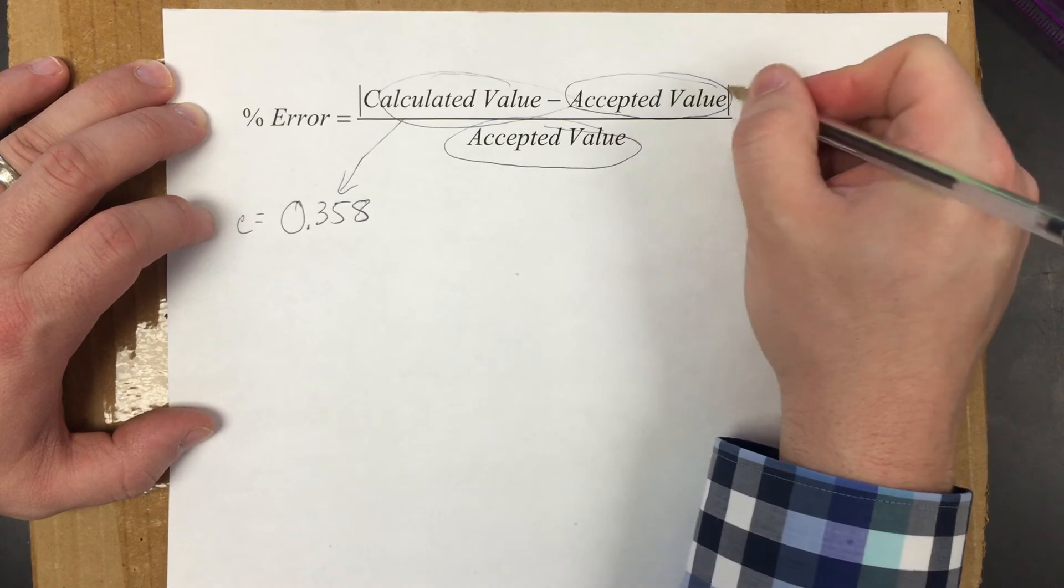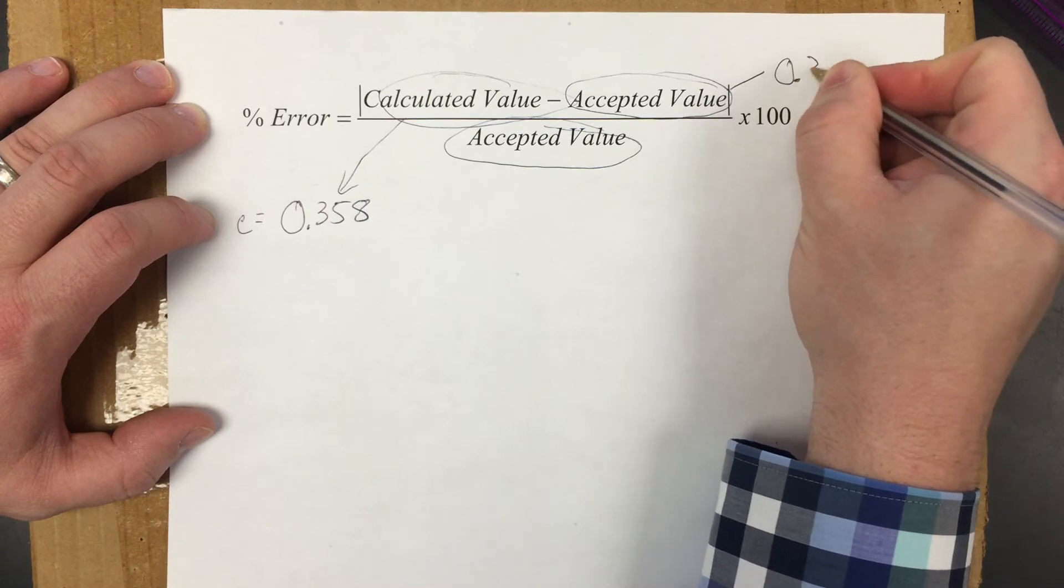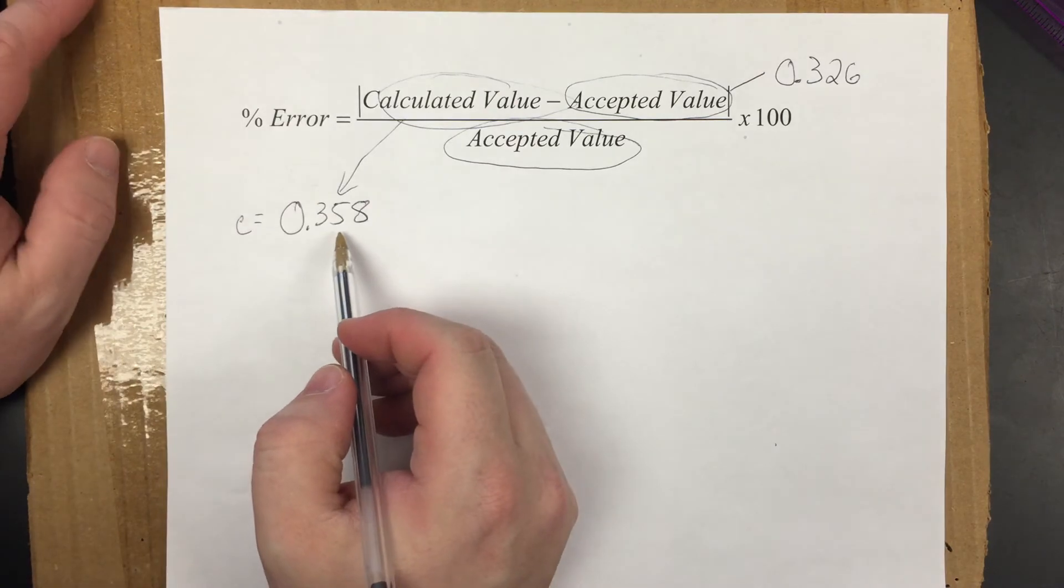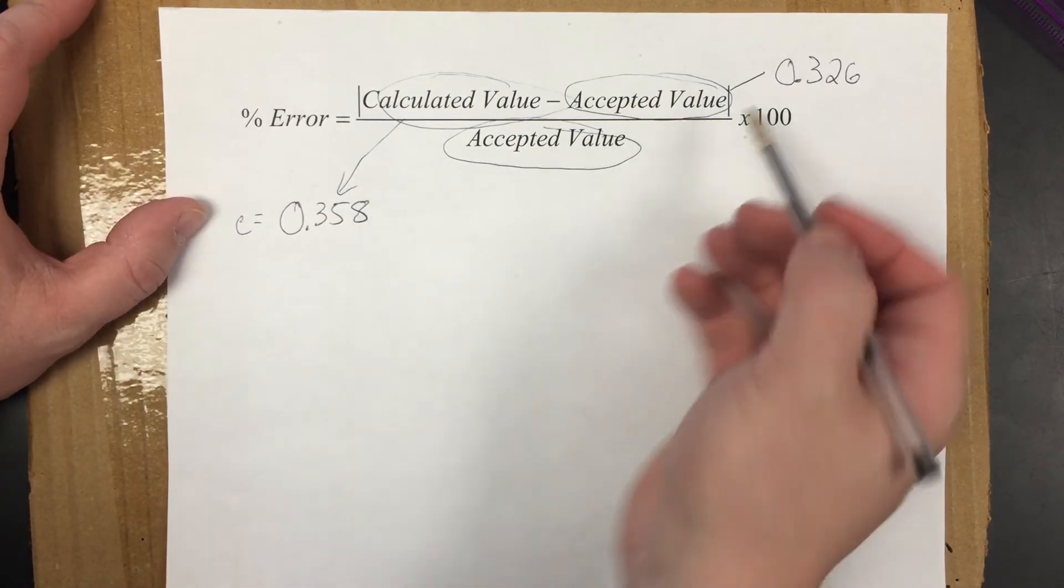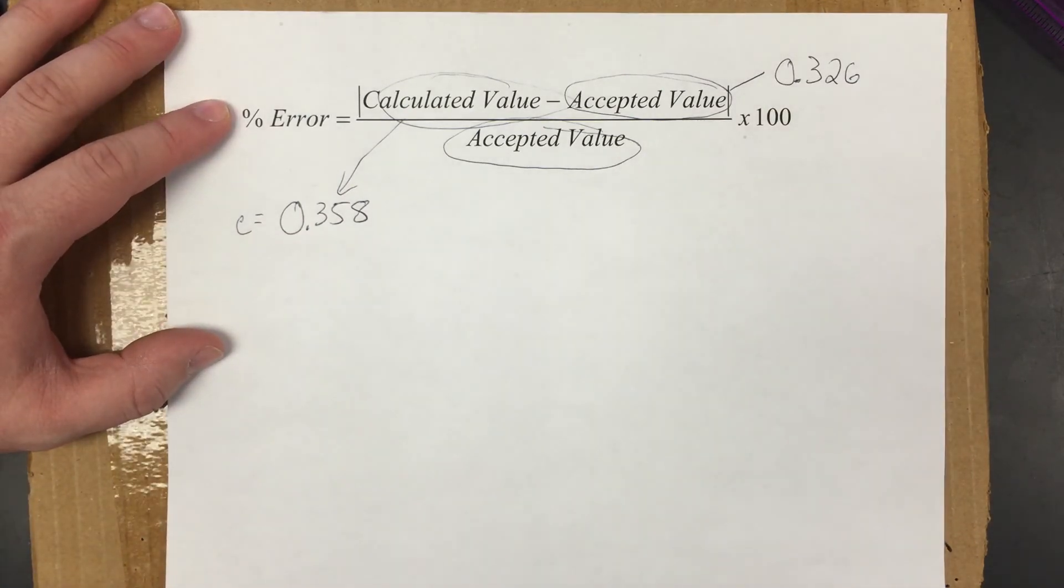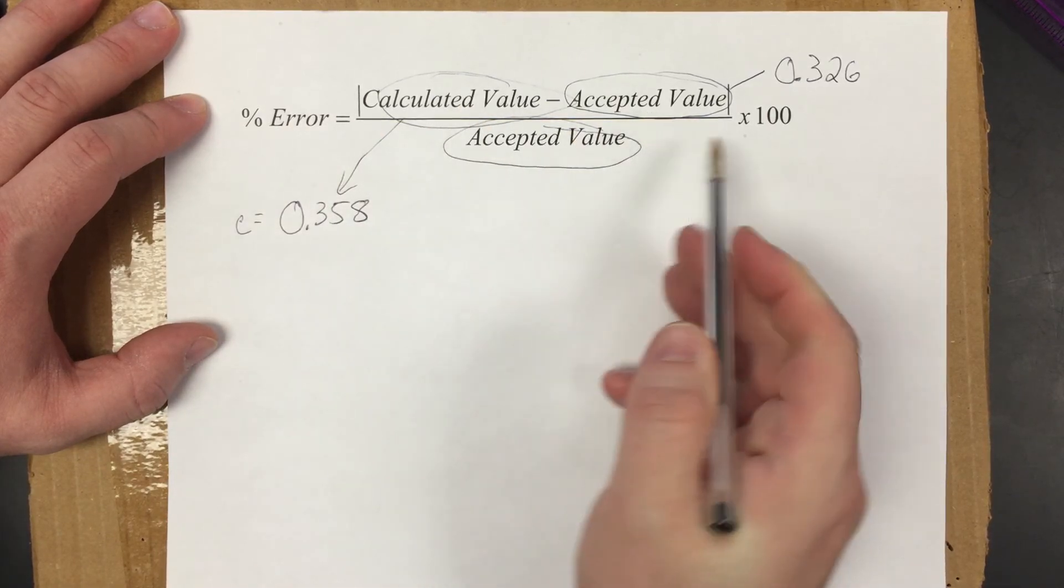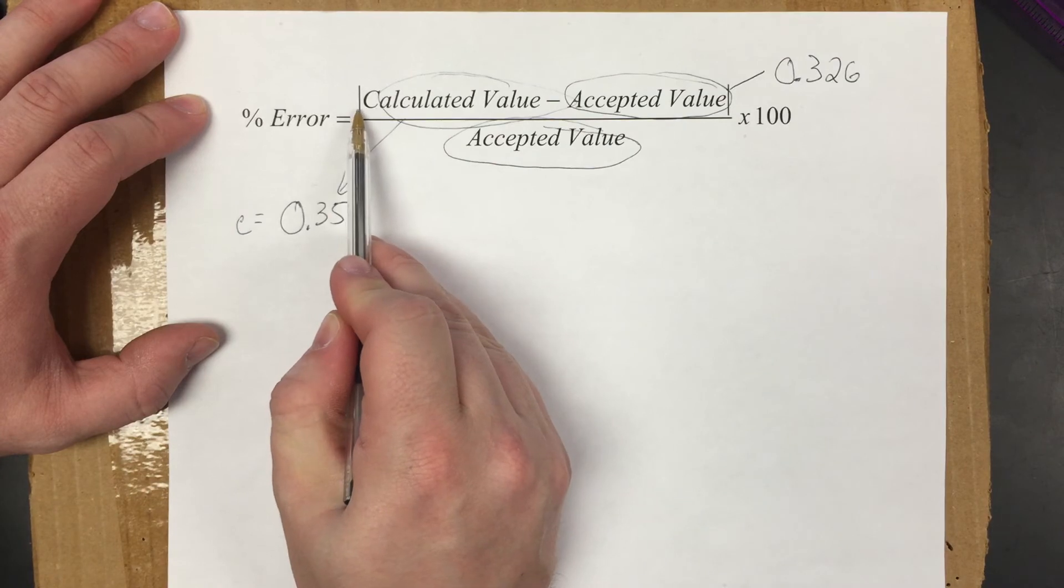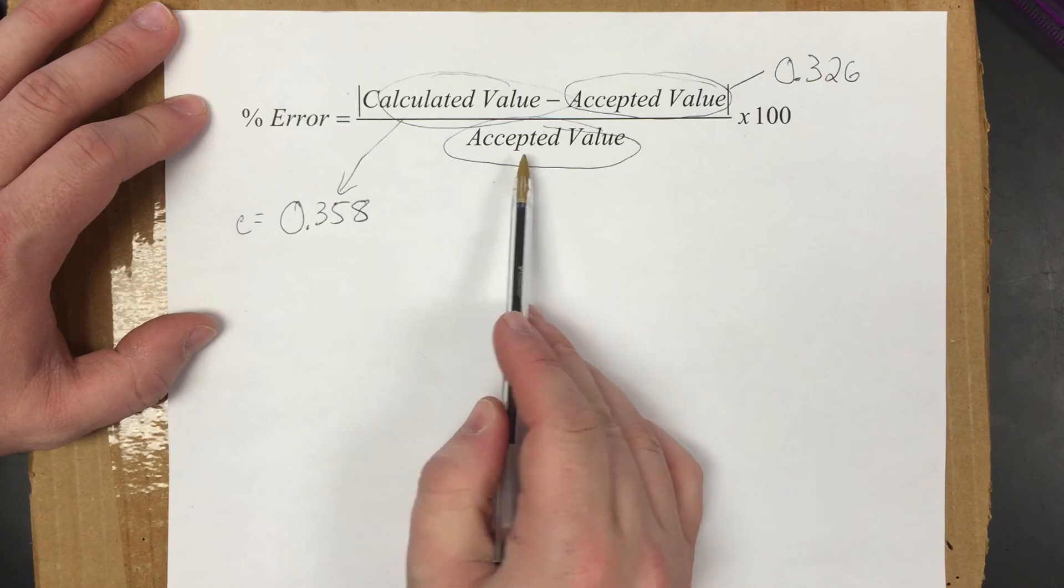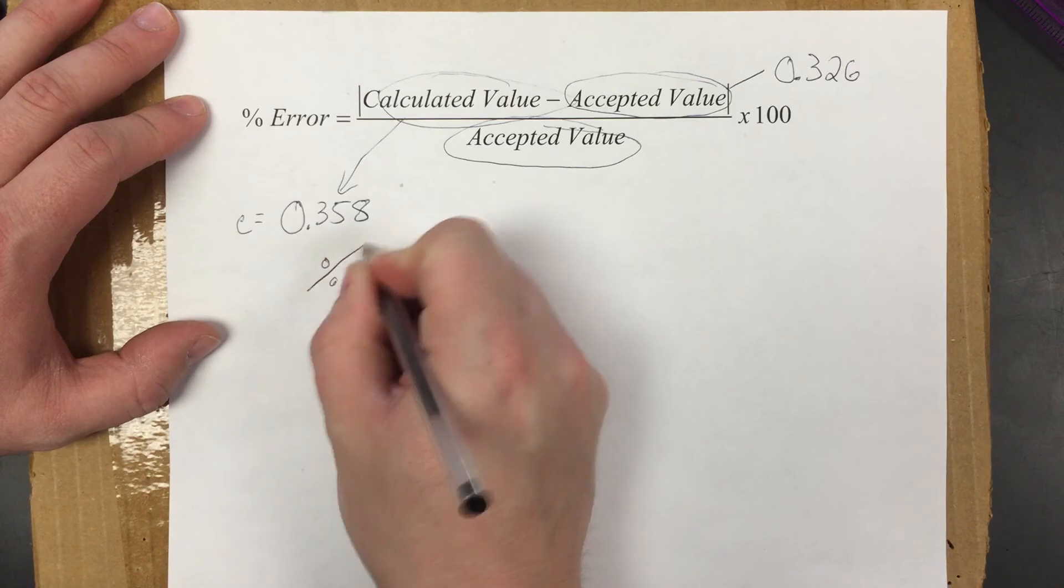Now let's say scientific journals publish that accepted value or what does science generally accept. Let's say the accepted value is 0.326, so I want to see what percent off am I? How far off when I calculated 0.358 am I off from the accepted value of 0.326? Here's my formula: percent error equals calculated minus accepted value. You'll notice that top part is in absolute value bars, that number is always going to be positive, divided by the accepted value times 100.